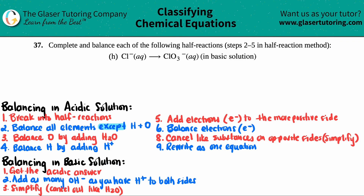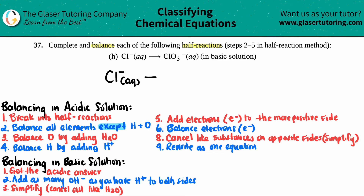Number 37: complete and balance each of the following half reactions, which are steps two through five in our half reaction method. We have letter H here — Cl minus aqueous going to yield ClO₃ minus aqueous — and we're doing this all in a basic solution.